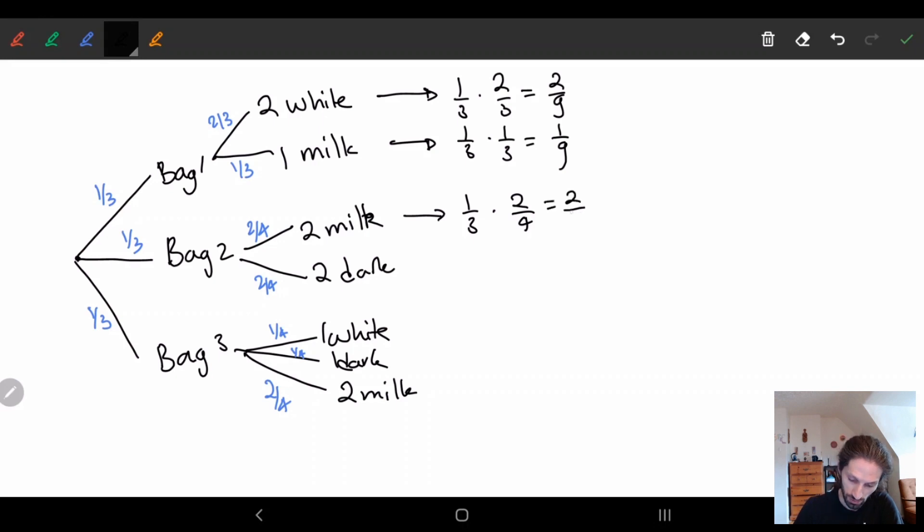To get one of these milk chocolates, I would have 1/3 to first choose the bag, and then I would have 2/4 in order to choose the milk. So this gives me 2/12. This one is basically identical: 2/4 is 2/12. And then here we have different numbers, but basically it's the same principle, the same idea. This one's 2/4, so we get 2/12.